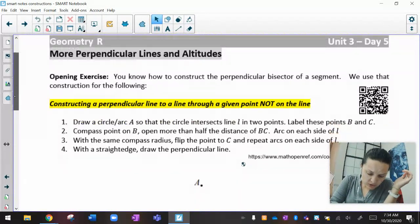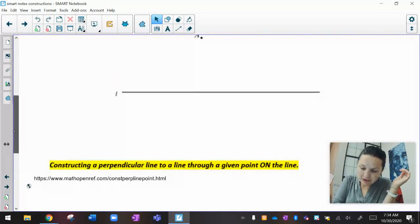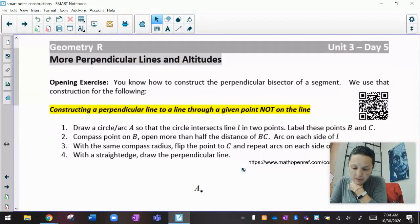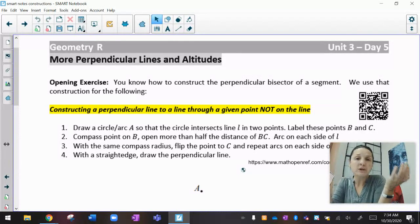In your notes packet, I am on page 11, and we are going to do notes on perpendicular lines and altitudes. We've already done one perpendicular line, which is that perpendicular bisector, where you open your compass more than halfway,